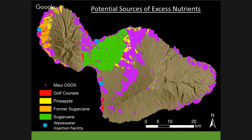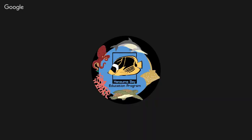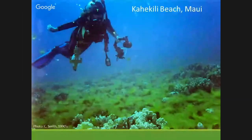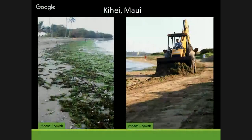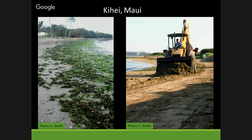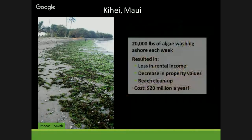In the early 90s, Maui began having recurring algal blooms that smothered the reef and eventually washed up along the shore. This picture from Kihei shows algae all along the shoreline that had to be bulldozed off. An economic study estimated this was costing Maui County about $20 million a year in lost rental income, decreased property values, and cleanup costs.